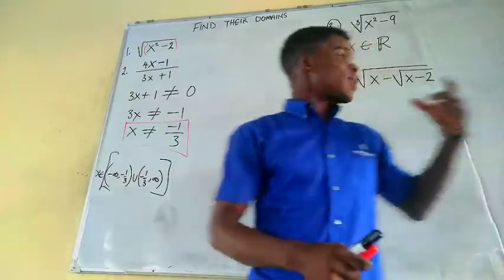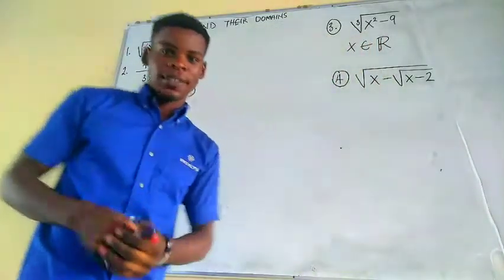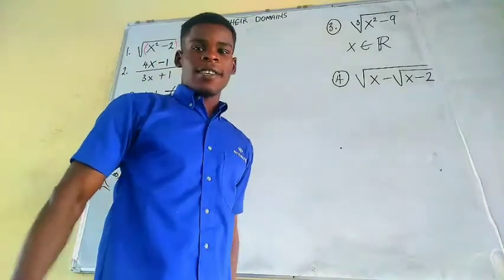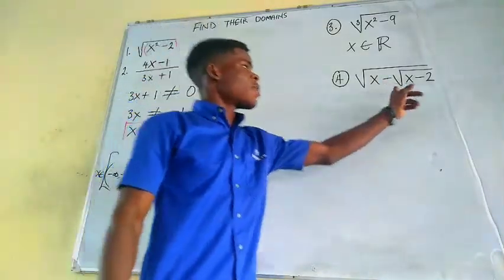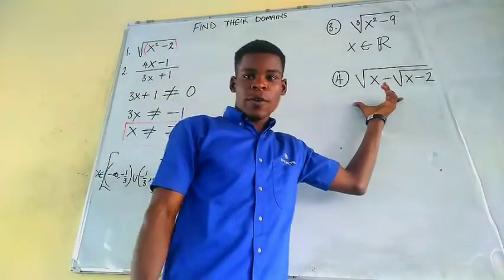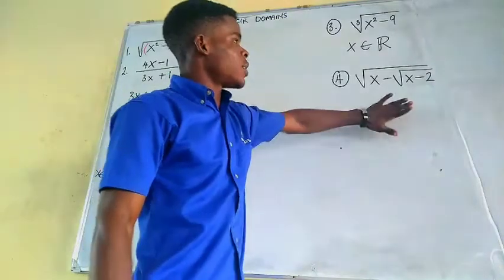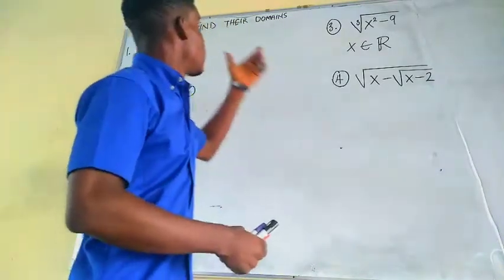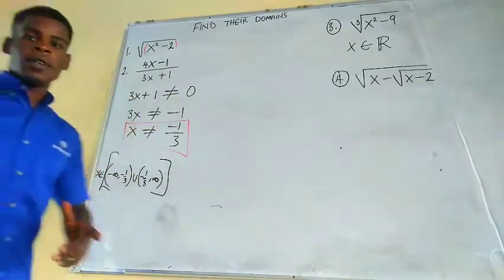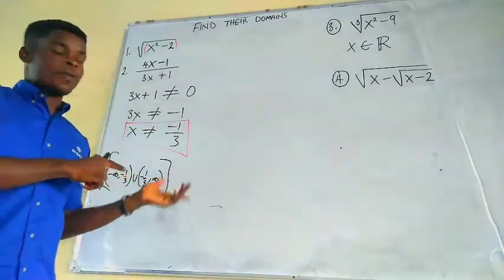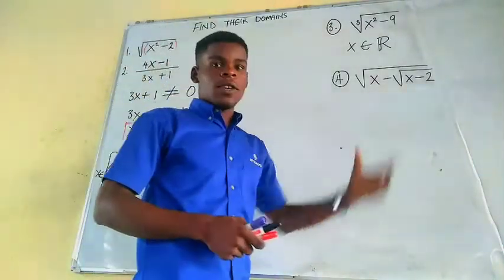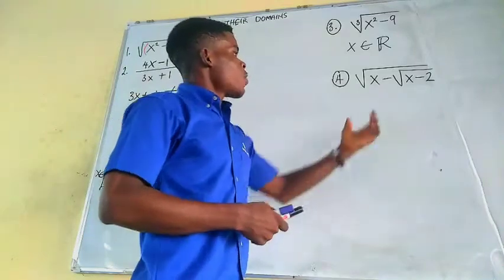Welcome once again to this channel. Right here is number four: we have the square root of x minus the square root of x minus two — a nested square root function. This is part of a series; if you haven't watched the previous videos on finding domains, go back and watch those first before continuing with this one.